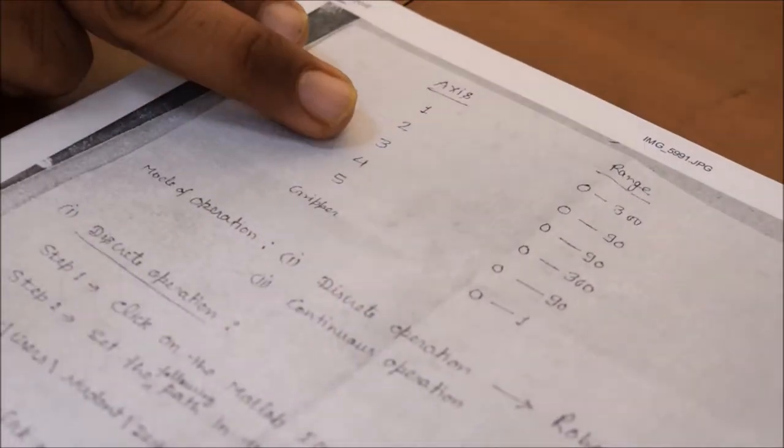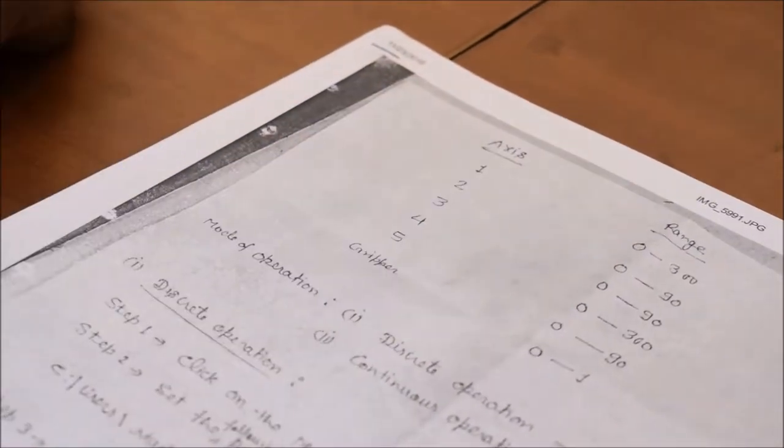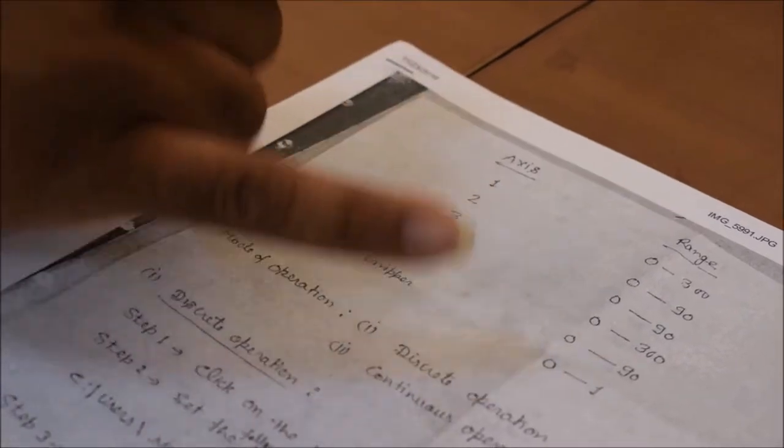Basically, we are providing, suppose we are doing the axis one. The range of axis one is 0 to 300. The second axis is 0 to 90. Third axis is 0 to 90. Fourth axis is 0 to 300. So, this is the limitations of that particular arm.